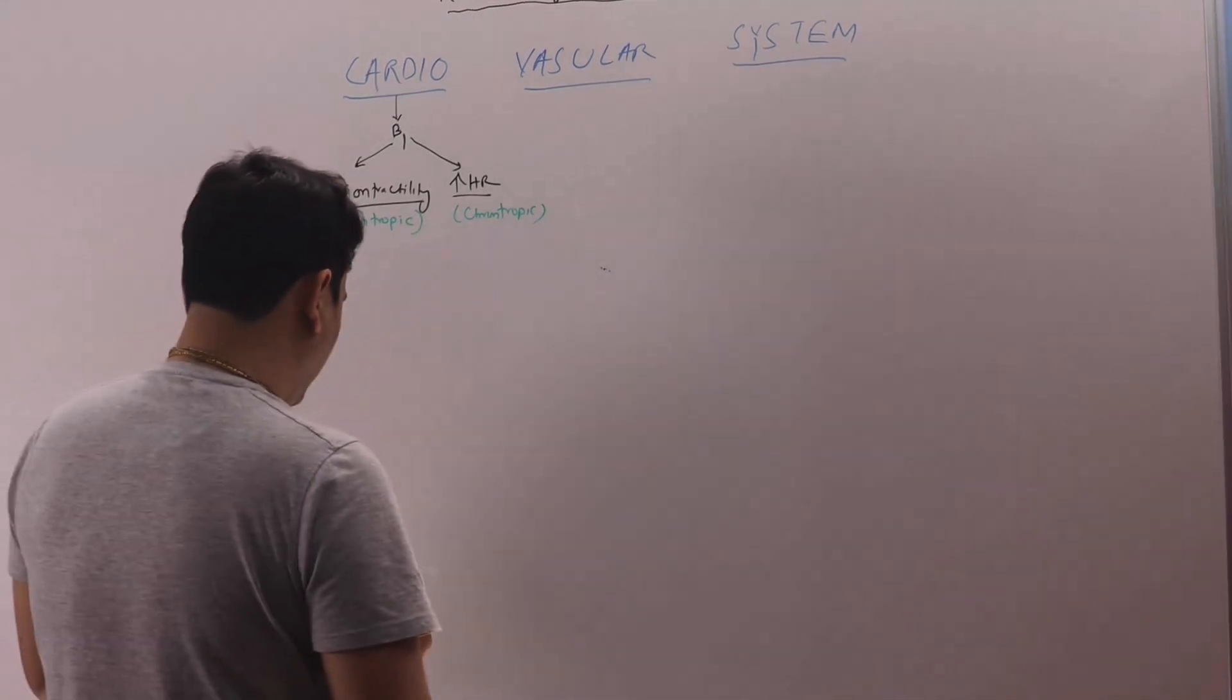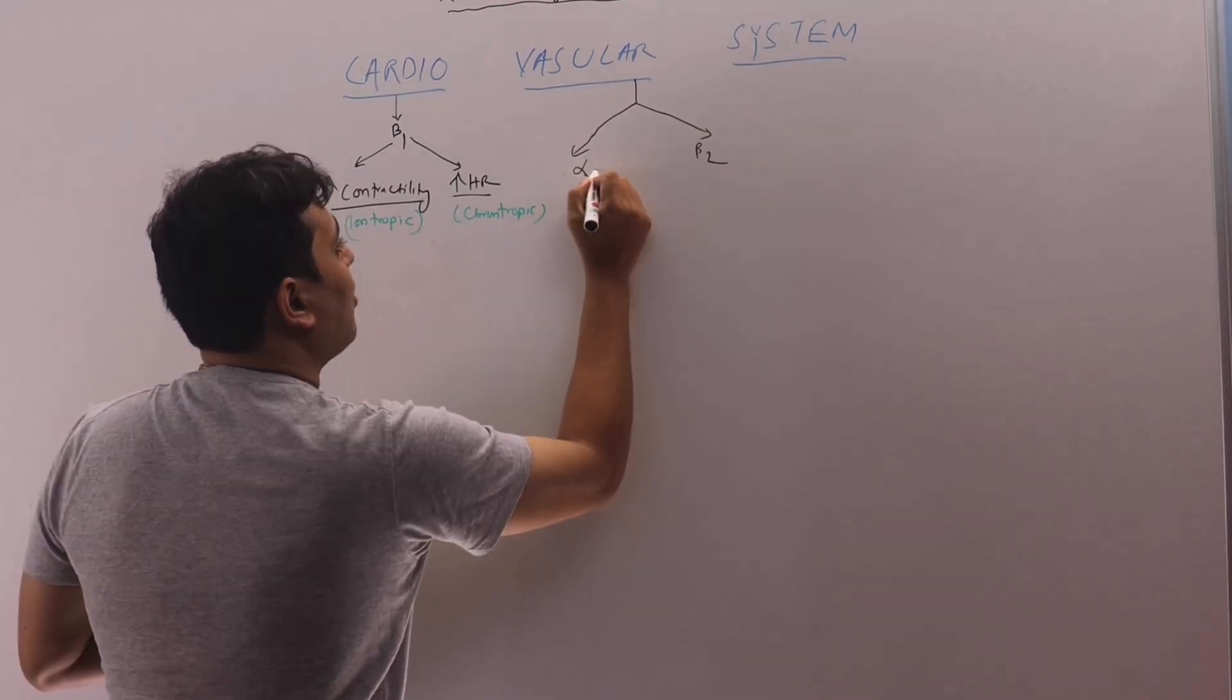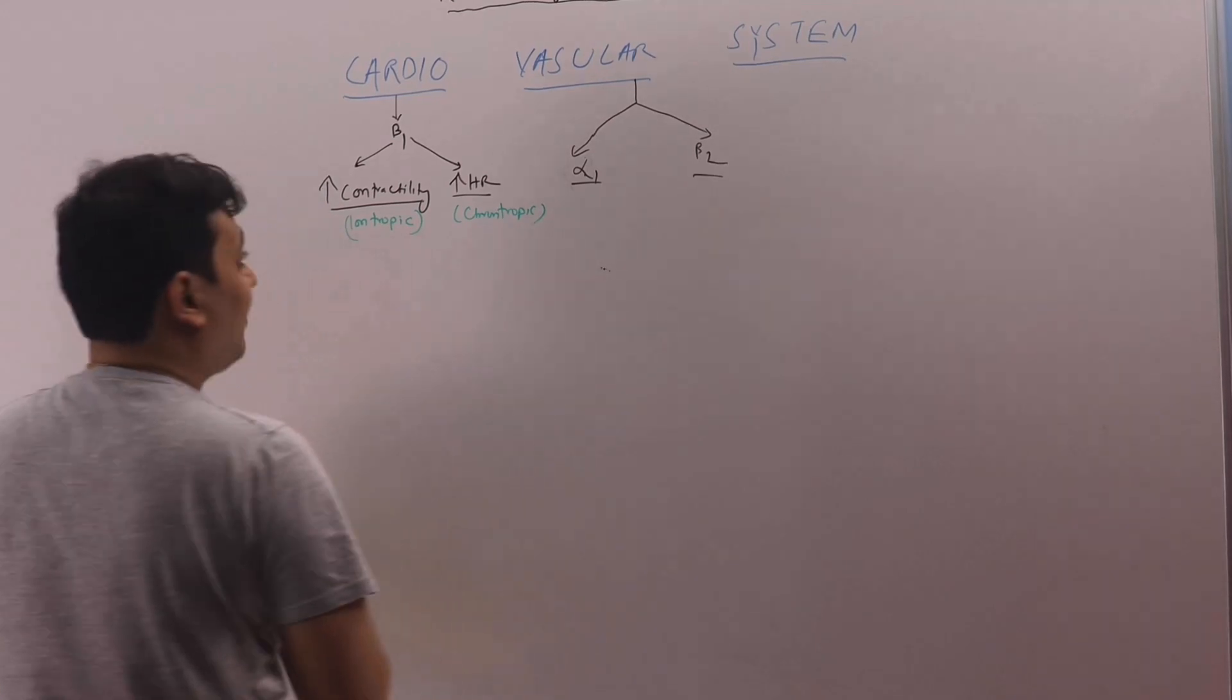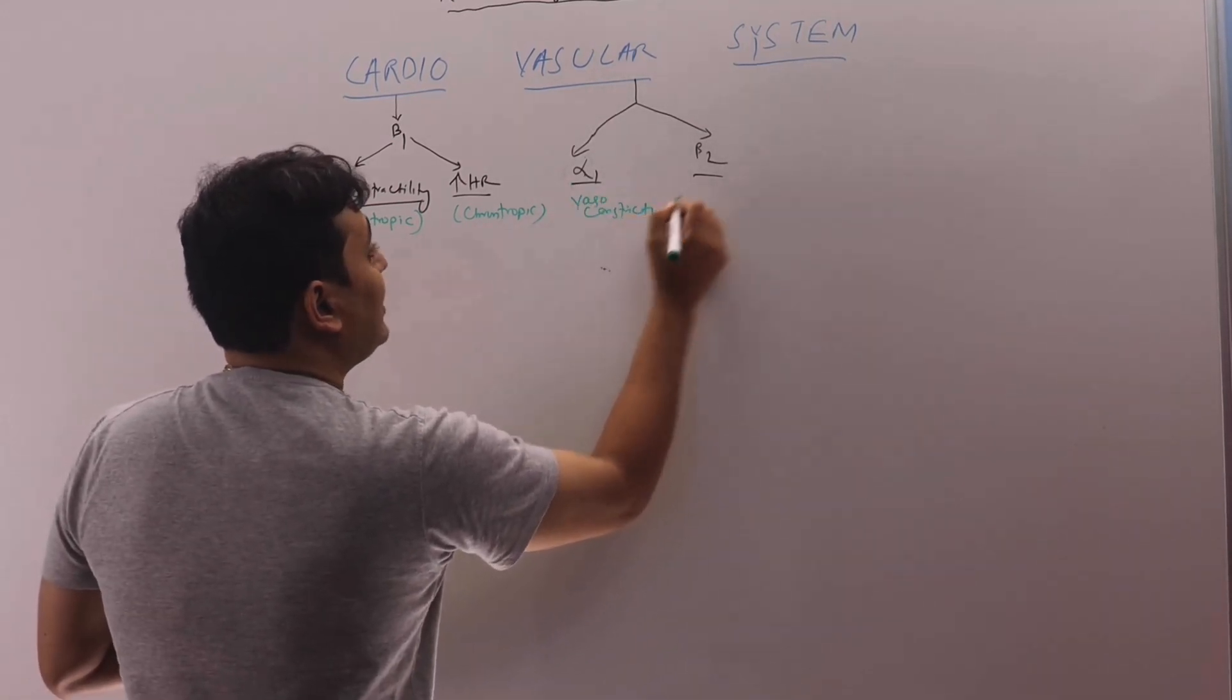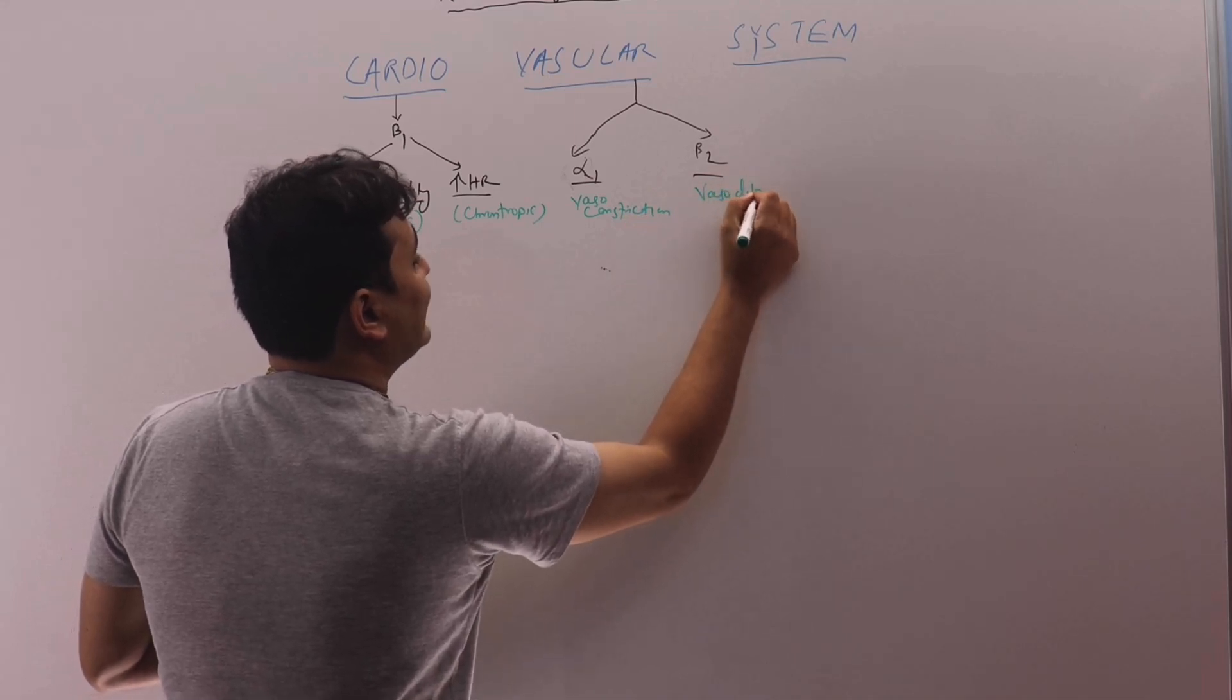In the vascular system, we have two things. This is alpha 1 and we have beta 2. So the alpha 1 will do vasoconstriction and the beta 2 will do vasodilation.